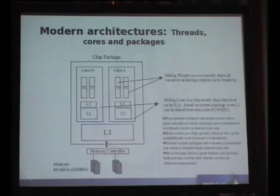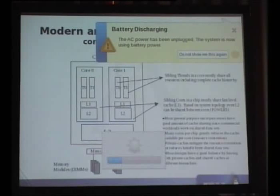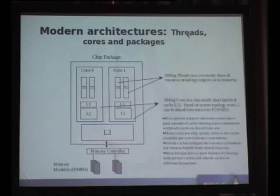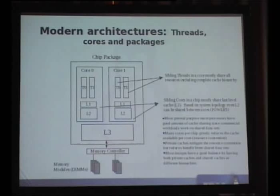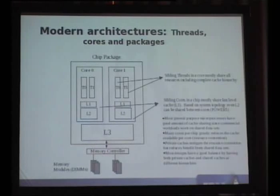We are seeing some amount of sharing of various resources within the package. The sibling threads share a lot of execution units within the core — CPU execution units — and they also share some cache units like L1 and L2, or rather exclusively make use of them within that core. At the core level, you have the last-level cache, L3, being shared by two different cores.